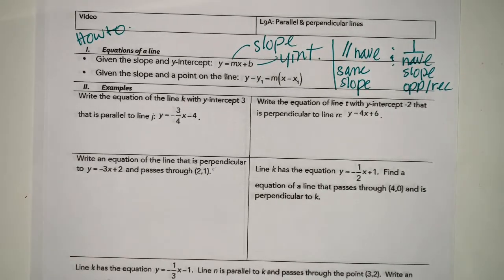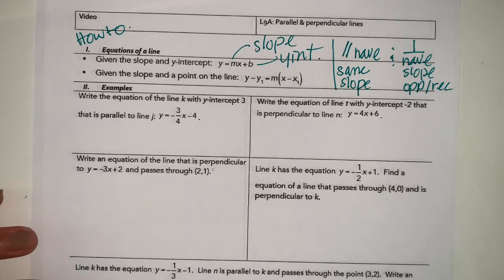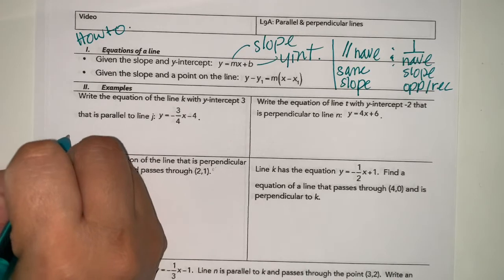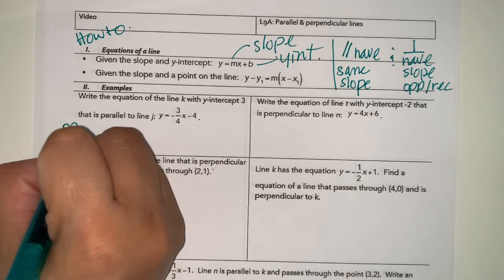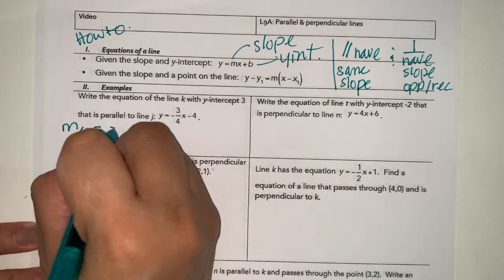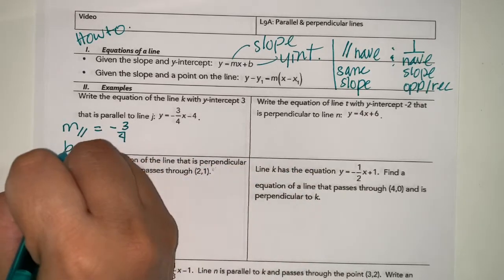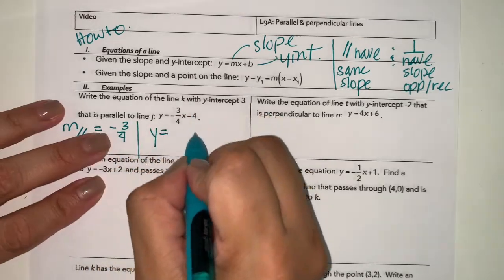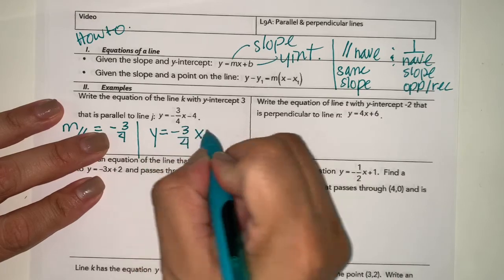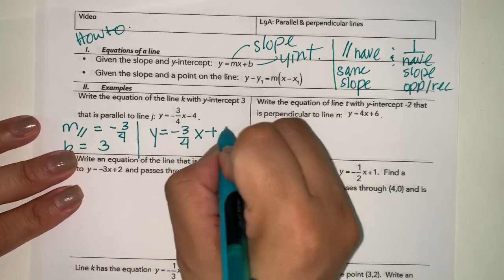Let's look at the first example. Write an equation of line k with y-intercept 3 that is parallel to line j: y equals negative 3 over 4x minus 4. We need to know the slope. For a parallel line, the slope is the same: negative 3 over 4. And the y-intercept is 3. So: y equals negative 3 over 4x plus 3.